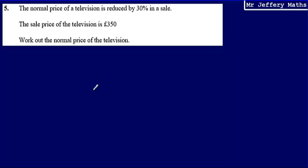So the first thing I need to recognize here is that we started with an amount that I don't know. And from that amount that I don't know, 30% was taken away from it. So the normal price of the television was what I started with. I took away 30% and that gave me my sale price, which is £350.